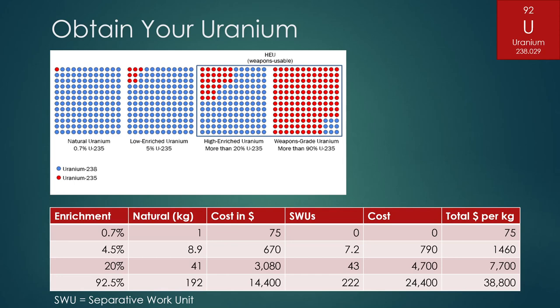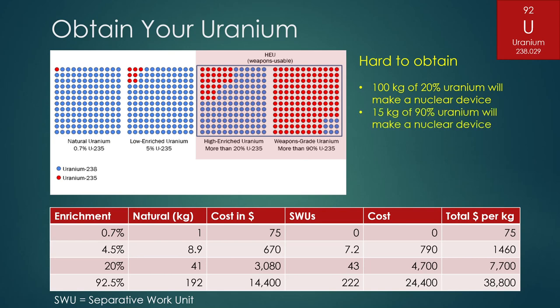So that's what we need. There are some reactor designs that only need 20%, the one I chose actually needs 92.5%. But there is a bit of a problem with these uraniums. They tend to be very hard to obtain for a specific reason. If you have 100 kilograms of 20% uranium, you will be able to make a nuclear device out of it. And if you have 15 kilograms of 90% uranium, you will also be able to make a nuclear device out of it. So to be able to get this, you need to look for a government sponsor, someone who will work with you so you can get access to these higher enriched uraniums.